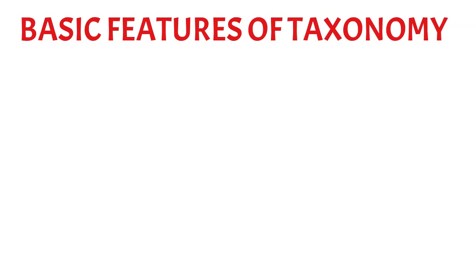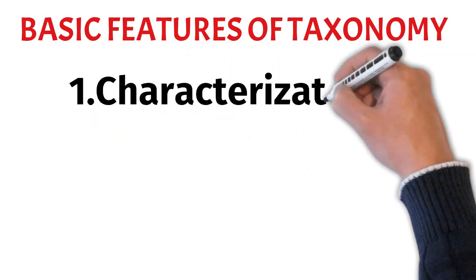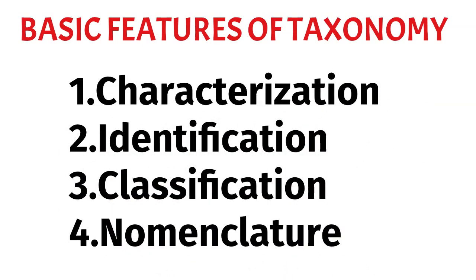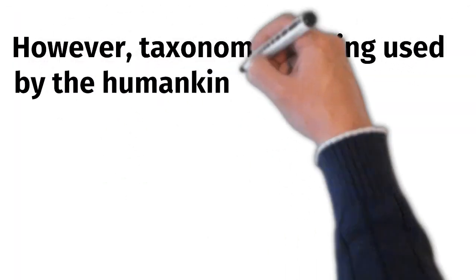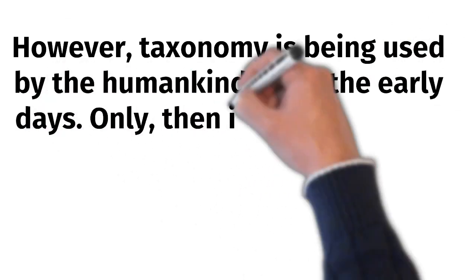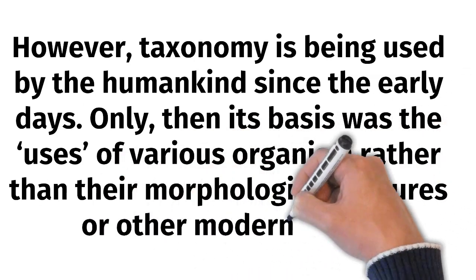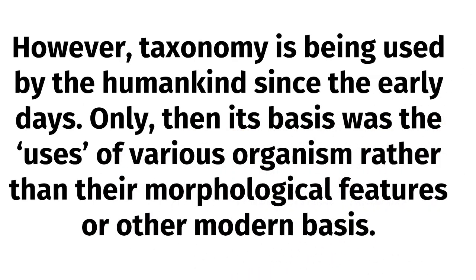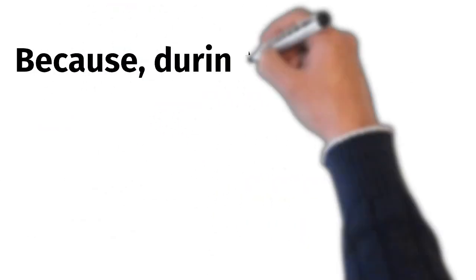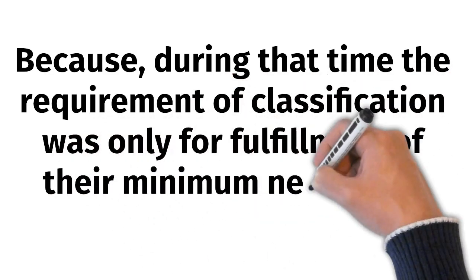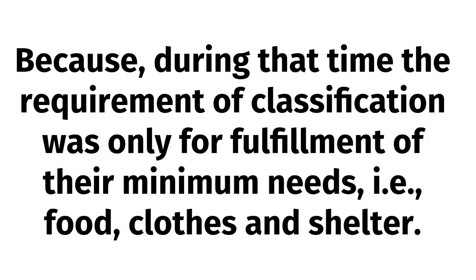The basic features of taxonomy are characterization, identification, classification and nomenclature. However, taxonomy has been used by humankind since early days. Only then, its basis was the uses of various organisms rather than their morphological features or other modern criteria, because during that time classification was only for fulfillment of minimum needs — that is food, clothes and shelter.